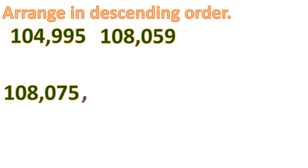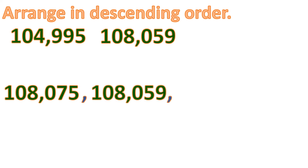Next is to compare the remaining two numbers. Starting from the 100,000th place, they are the same. The 10,000th place is also the same. At the 1,000th place, we have 4 and 8, so the bigger number among these two is 108,059. The remaining number is 104,995. So this is arranging from biggest to smallest, or we call it descending order.